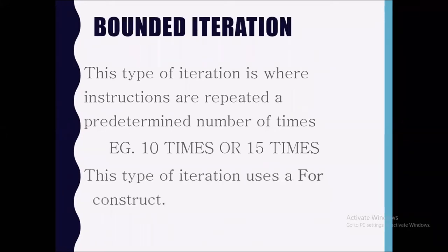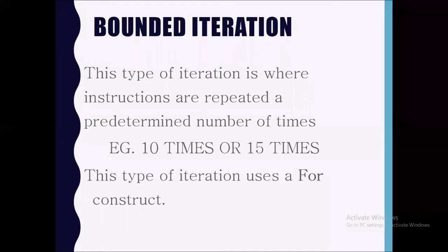Bounded iteration uses a FOR construct. Once you know how many times your algorithm is supposed to loop, you are going to use a FOR. That's how CXC is structured — once it is supposed to loop 12 times, use a FOR loop. That is what they are looking for in terms of their mark scheme. While you can use a different type of loop, they are looking exactly for you to use a FOR.